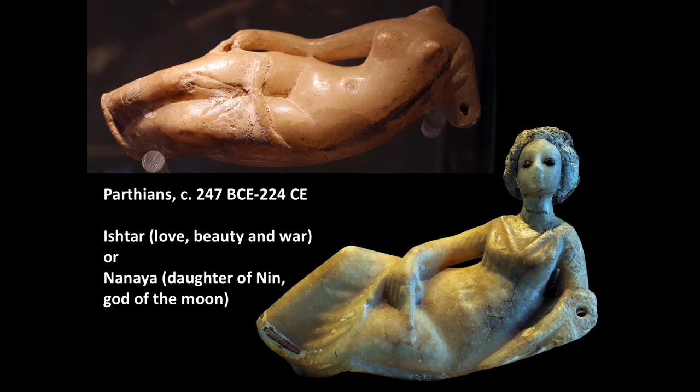Or the goddess Nanaya, who is slightly less known. She was the daughter of Nin, the god of the moon, and was sort of treated by the Romans as the equivalent to Diana, the huntress goddess of the moon.